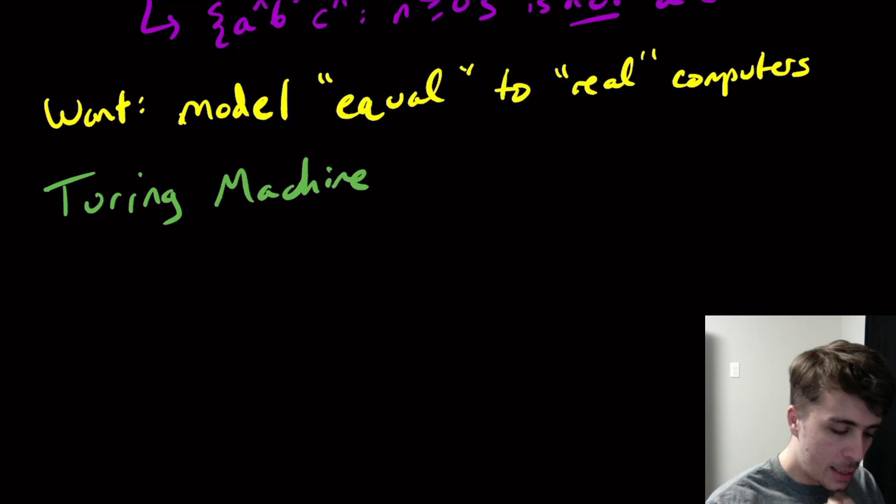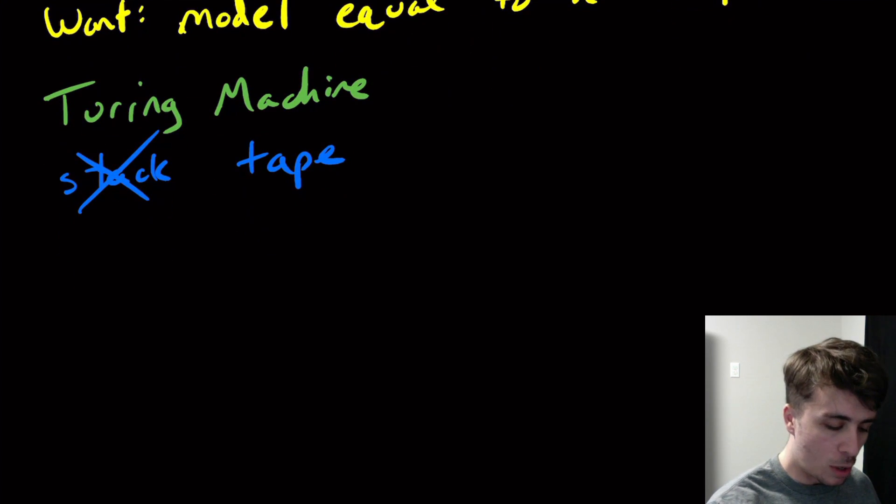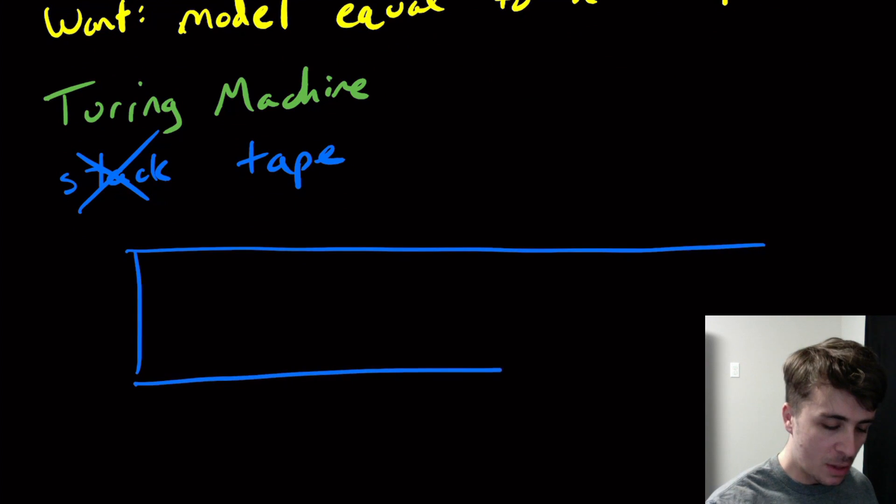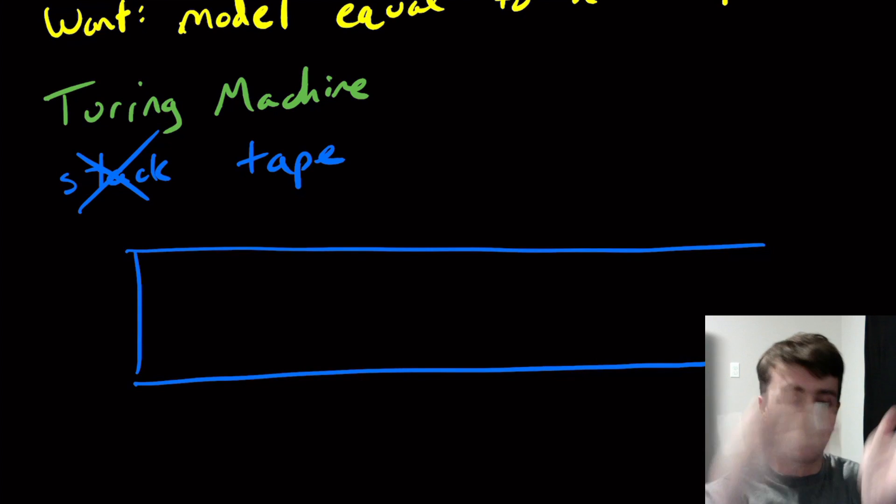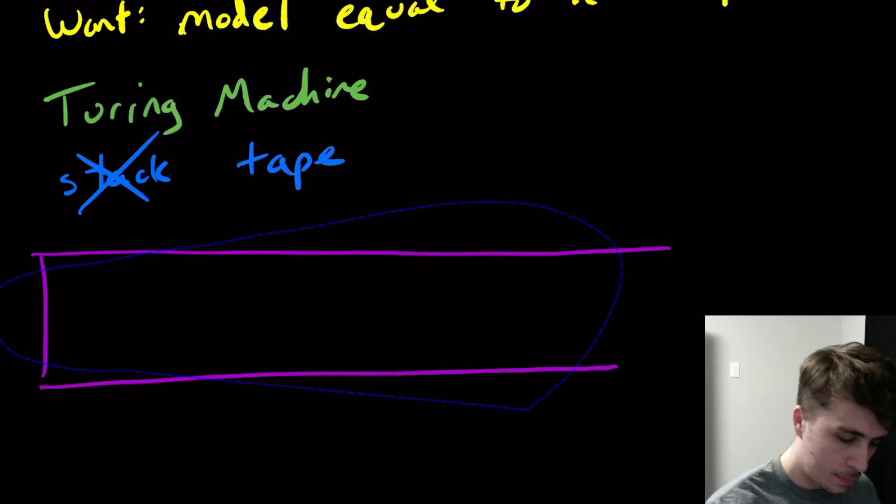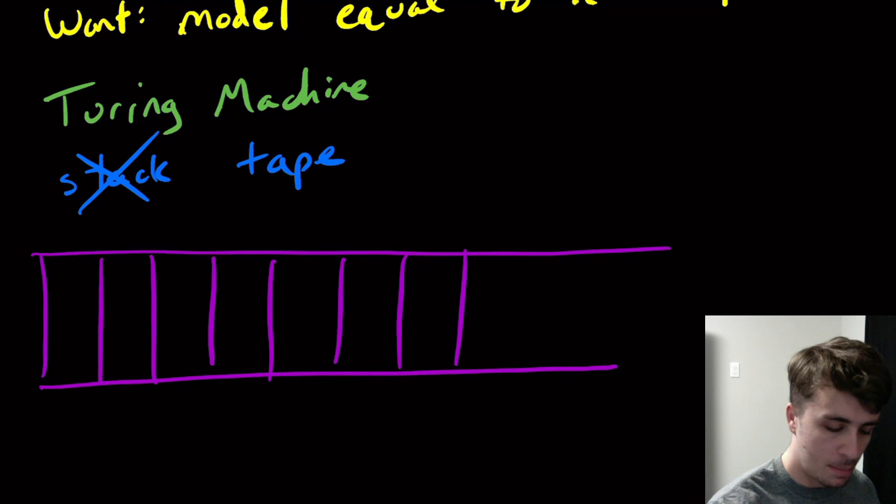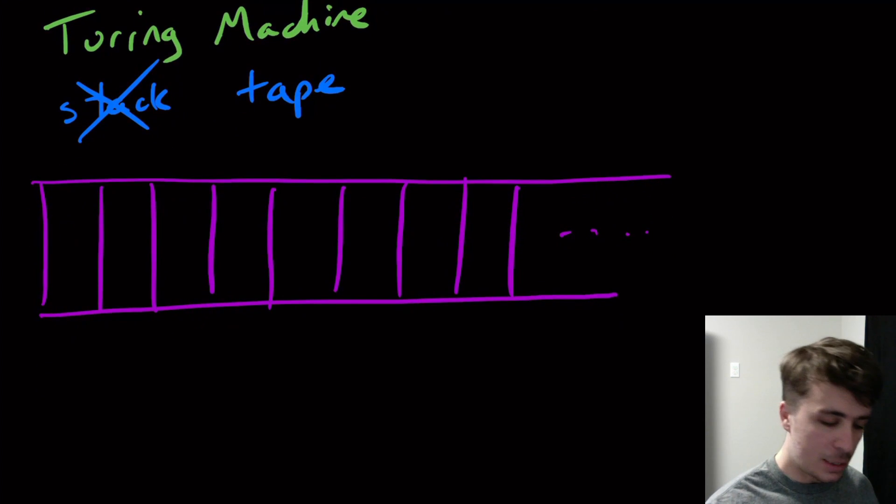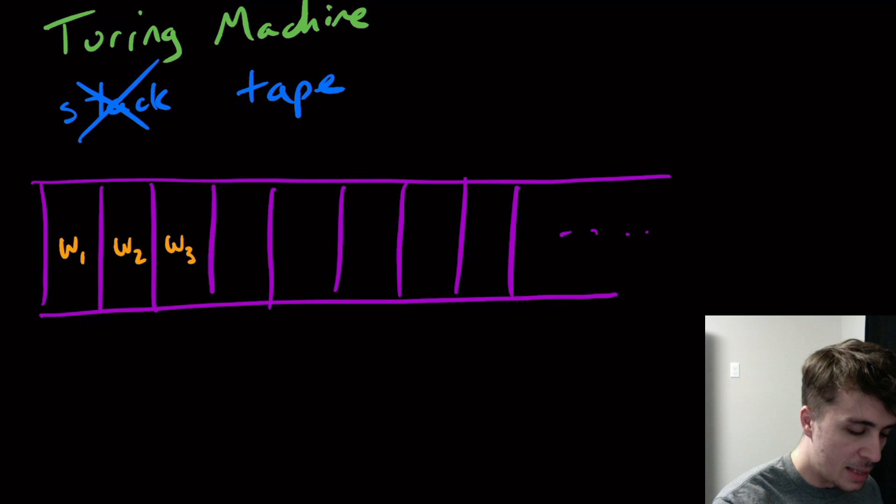So what is a Turing machine? The basic idea is to generalize what a PDA can do. Instead of a stack, we have a tape. The way that this works is that we have a tape that looks like this, kind of like a stack that we rotated on the side. On this tape, we have a bunch of cells, just like a stack. We're going to put the input on the tape, W1 through WN.